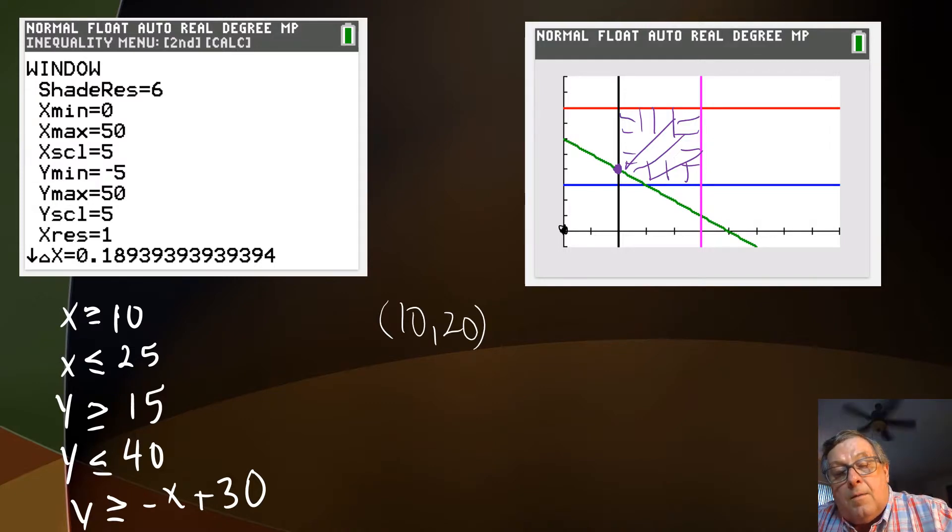All right. Let's go up to this point here. And x is still 10. And y is 40, 5, 10, 15, 20, 25, 30, 35, 40.